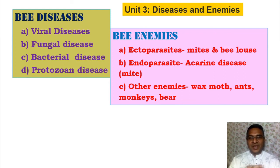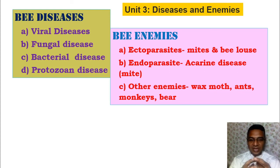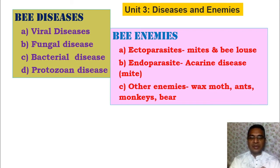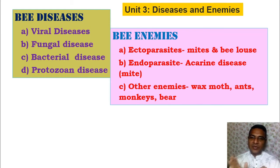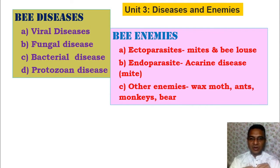Good morning friends. The next unit is diseases and enemies, which is part of apiculture. In this topic two aspects are focused: bee diseases, where we discuss four different types caused by four different organisms — viral diseases, fungal diseases, bacterial diseases, and protozoan diseases — and bee enemies, which are intruders that attack the colony.